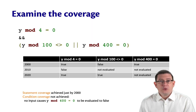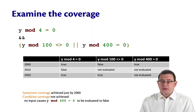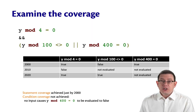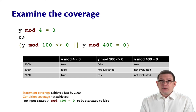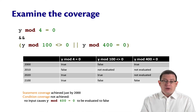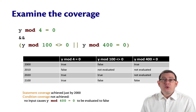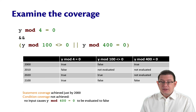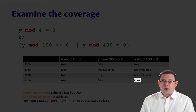If you look at the column for y mod 400 equals 0, there's no case in which that expression evaluates to false — you manage to get true, but not false. So to achieve condition coverage, we need to add another test case. 2100 would suffice: it causes that final boolean expression to evaluate to false, giving us condition coverage.